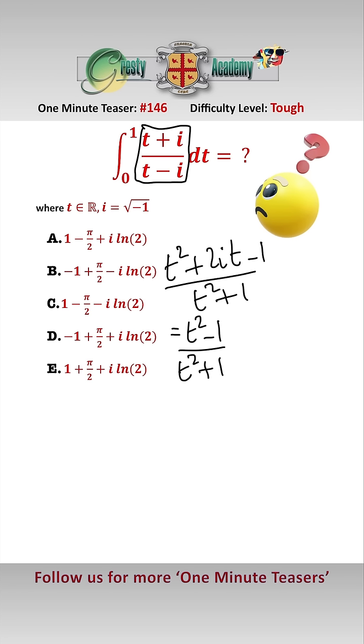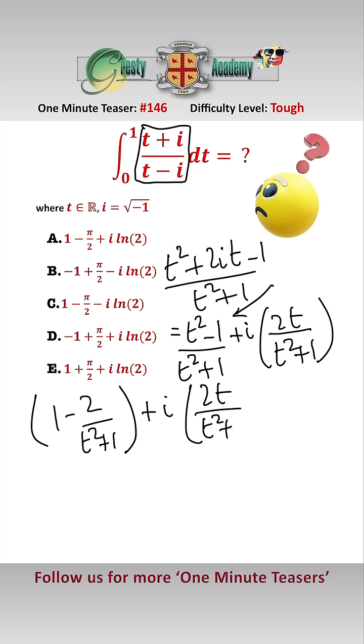t squared minus 1 over t squared plus 1 plus i times 2t over t squared plus 1. We can further split this into 1 minus 2 over t squared plus 1 plus i times 2t over t squared plus 1.